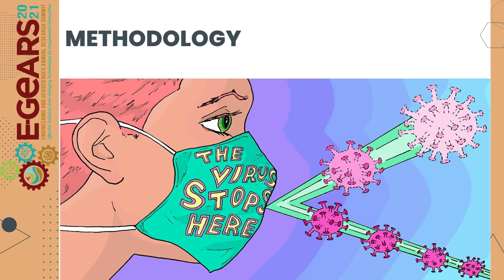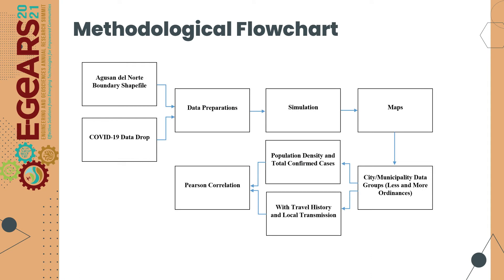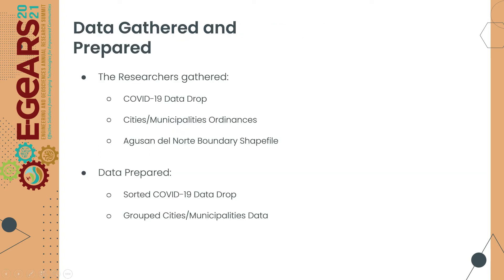Methodology. The methodological flowchart begins with the Agusan del Norte boundary shapefile and COVID-19 data drop. These data were prepared to conduct simulation and produce map outputs. After the maps, city and municipality data are grouped by less and more ordinances, sorted by population density, total confirmed cases, travel history, and local transmission. The researchers gathered COVID-19 data drop, ordinances made to fight against COVID-19 in every city and municipality, and the Agusan del Norte boundary shapefile.